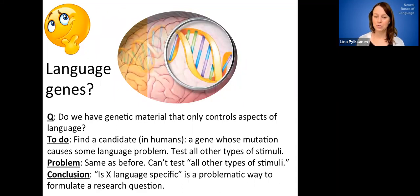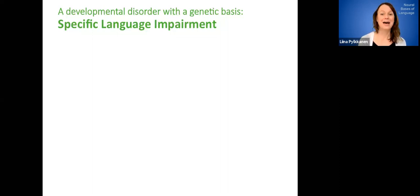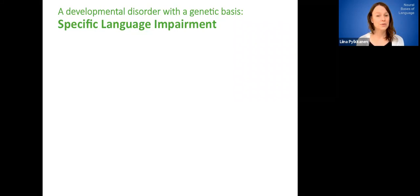But now we know that's problematic. So we can't really test all other types of stimuli. And we kind of arrive at the same conclusions of this particular question. So it's something language specific, it's just a problematic way to kind of go about one's research program. Okay, so now having kind of established this, what I am next going to tell you is that we actually have a developmental disorder that seems to have a genetic basis that's called specific language impairment. So that sounds like exactly the thing that we were interested in on step one on the previous slide.